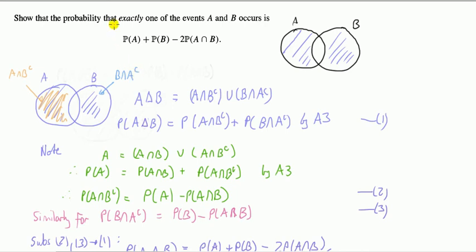Hi guys, the probability of exactly one of two events occurring is this expression. It looks very familiar because you know probability of A union B is probability of A plus probability of B minus probability of A and B. So we want exactly one, and it turns out we've got minus two lots of them.